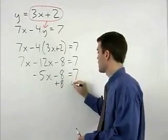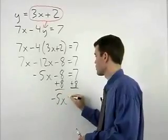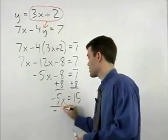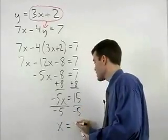Add 8 to both sides and negative 5x equals 15. Divide both sides by negative 5 and x equals negative 3.